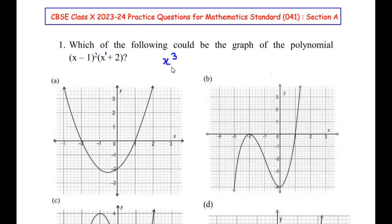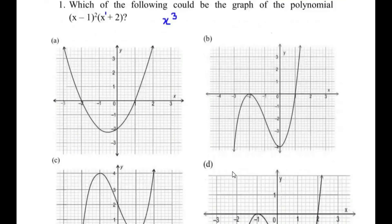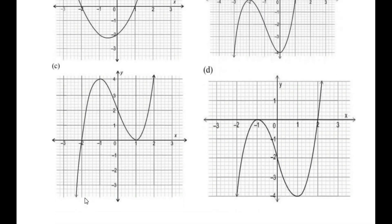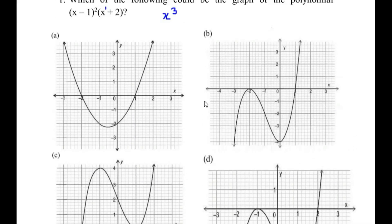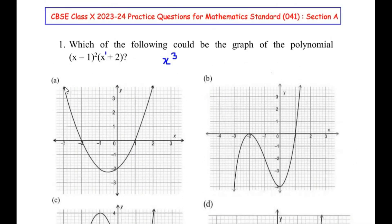A cubic polynomial is of the shape S. Looking at the graphs, we can see that options B, C, and D are S-shaped, but option A is not. So by looking at the graphs we can understand that A is not a graph of the given polynomial, and A is out of the options.